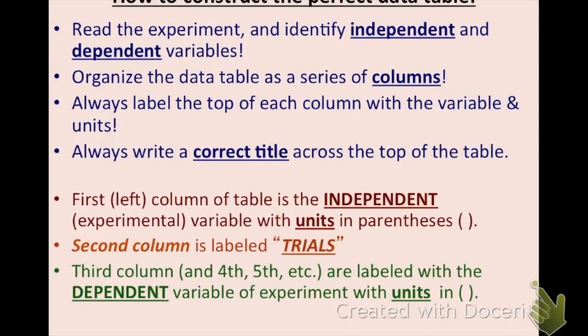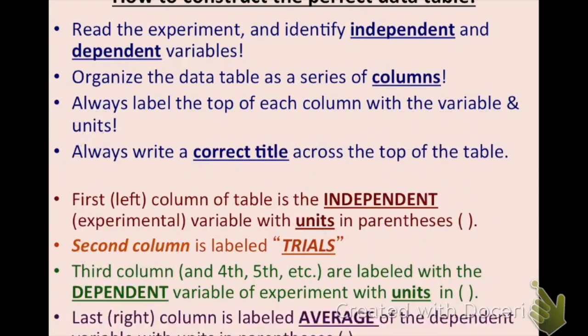Your third column, and fourth, fifth, sixth, depending on how many groups you have, are labeled with your dependent variable. So that could be with water, without water, with juice, with alcohol, or isopropyl alcohol, or honey, something like that. And make sure you have units if units apply. And then, when you're doing multiple trials, you have to have averages. If you're not doing trials, you might not need an average, but always when you have multiple trials, you need to calculate your average. So you will have an average column as well.